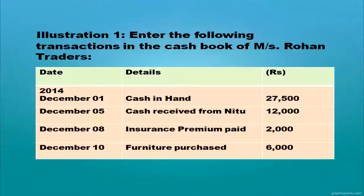All cash receipts are recorded on the debit side of the cash book and all payments are recorded on the credit side. Here is a question: prepare a simple cash book with cash balance at the beginning of the month — that is, cash in hand. The opening cash balance is given. We have cash receipt from Neetu, insurance premium paid, and furniture purchased. Opening balance will be recorded on the debit side.